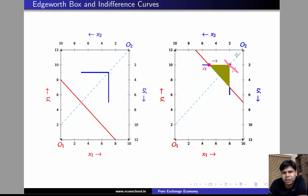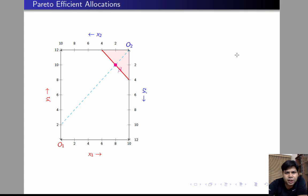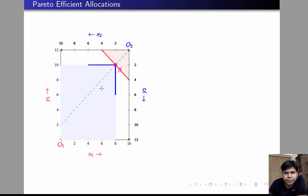Now we are going to quickly check whether the points lying on the 45-degree line are efficient or not. Consider a point such as beta. If you plot the indifference curve of individual 1 through this point, this is how it is going to look — this is the region where individual 1 can be made better off. Now let's plot the indifference curve of individual 2 through beta. The set of points where individual 2 can be made better off is shaded blue here. Now if we want to make individual 1 strictly better off, we will have to move into that region. But if we move into that region, we will end up making individual 2 worse off. And if we want to make individual 2 better off, we will have to move into the other region, but that will end up making individual 1 worse off. So there is no way that we can improve the satisfaction level of one without reducing the satisfaction level of the other. So that means beta is efficient.